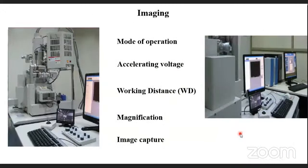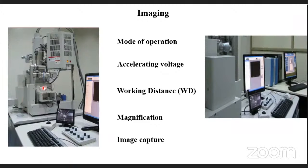After sample preparation, we come to the instrument and open the exchange chamber. We place the sample holder inside, push the sample in, close the chamber, and start the analysis. Before going for analysis, you should understand which mode you require — decided by you and the technical staff. We have different modes: secondary electron mode for basic analysis, and backscatter electron mode if you need elemental contrast.